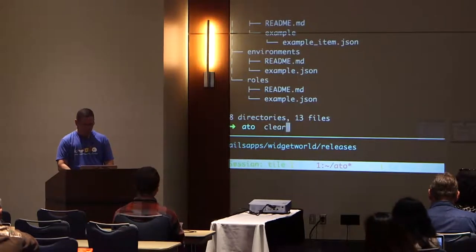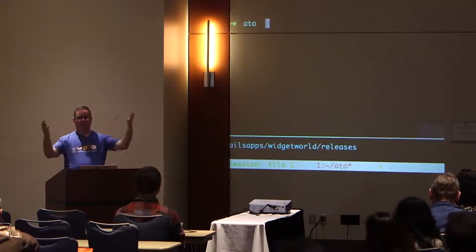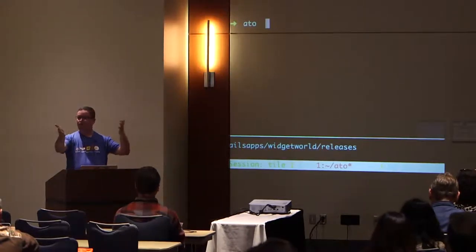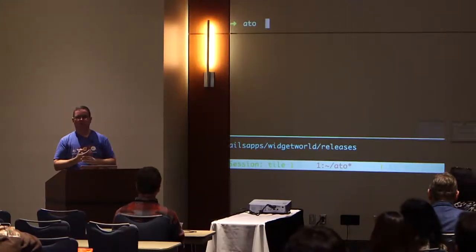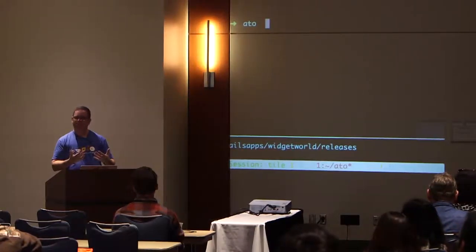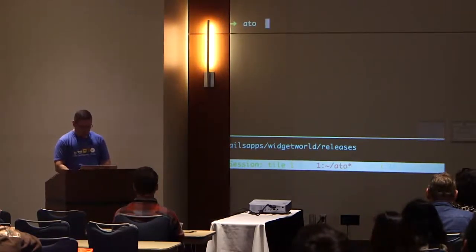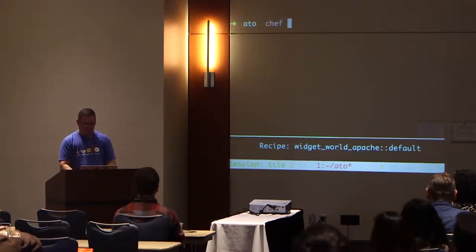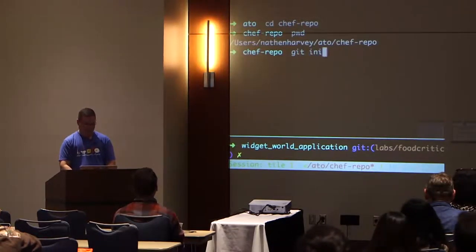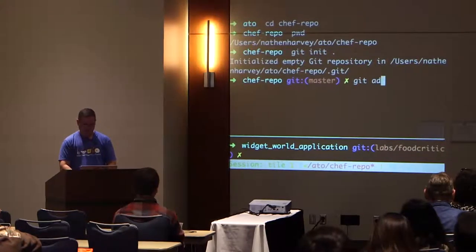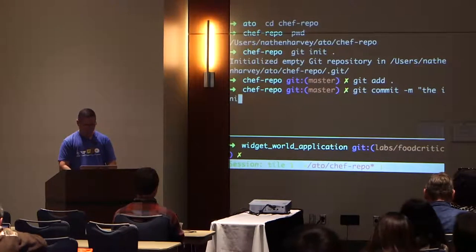What I want to do is run my Rails application. The first thing we know about a Rails app is you access it through a web browser, so we might need a web server. I'm going to CD into the chef-repo, then 'git init' the directory, 'git add' all the stuff, and 'git commit -m initial repo.' Now I feel better because I'm working in a repository and it's clean.